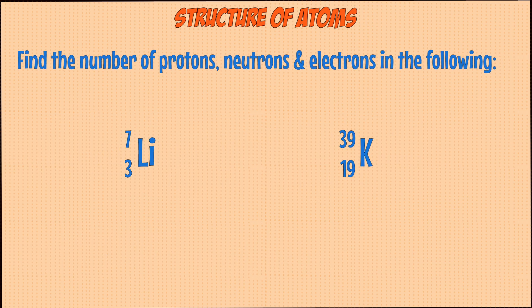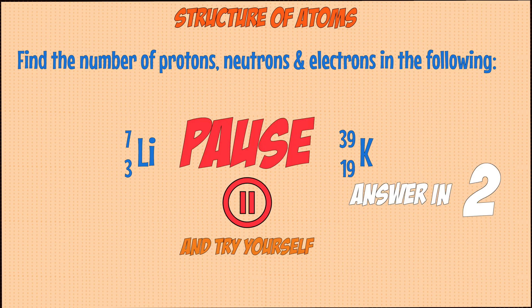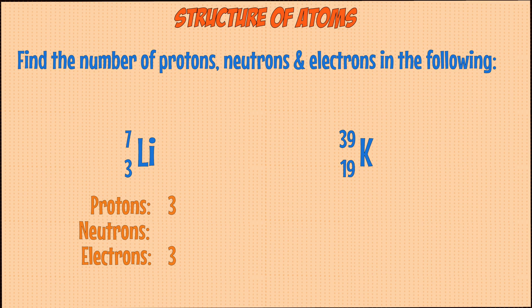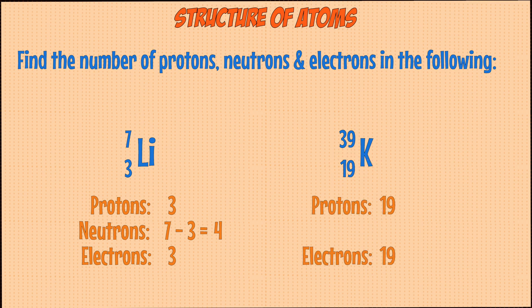As an example, let's work out the number of each subatomic particle in the following elements. Lithium has an atomic number of 3, which means the number of protons is also 3. As this is a neutral atom, the number of electrons is also 3. To work out the number of neutrons, you minus the atomic number from the mass number, so that's 7 minus 3 to give you 4 neutrons. For potassium, its atomic number is 19, so its proton and electron numbers are also 19. For neutrons, you do 39 minus 19 to give you 20 neutrons.